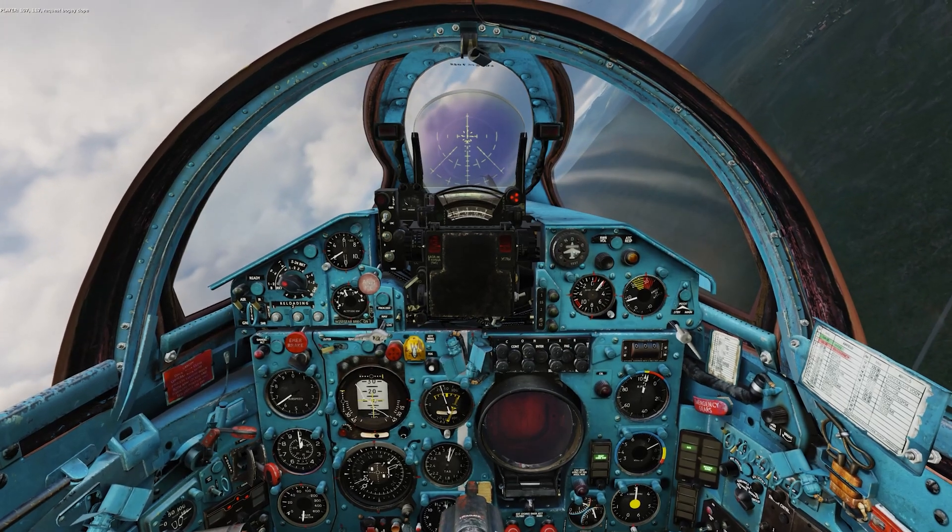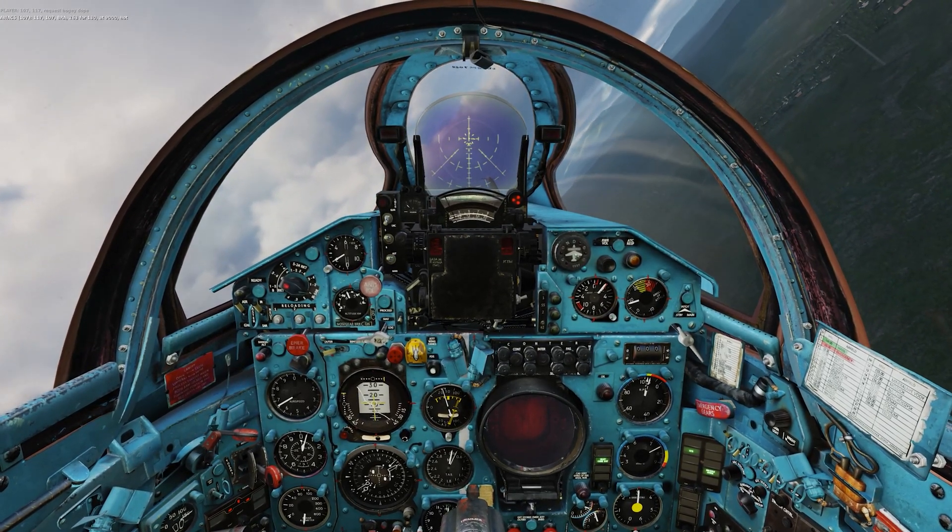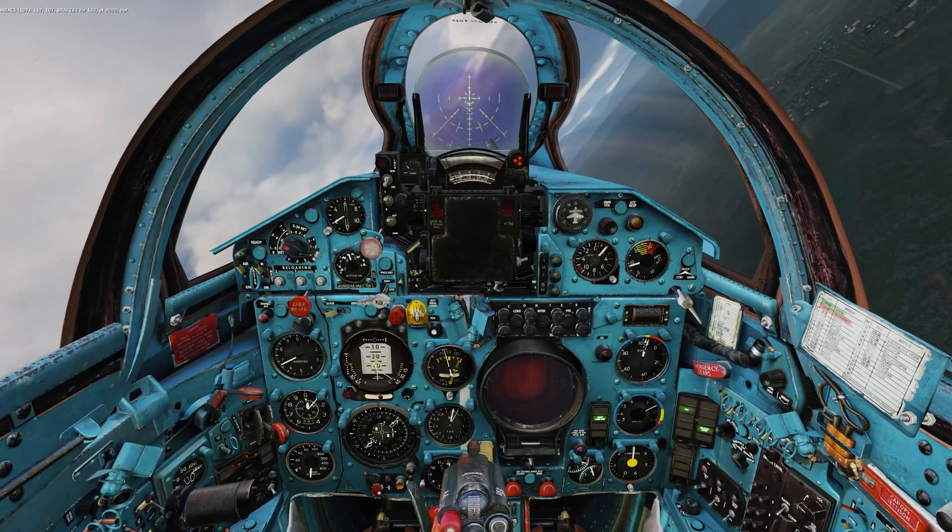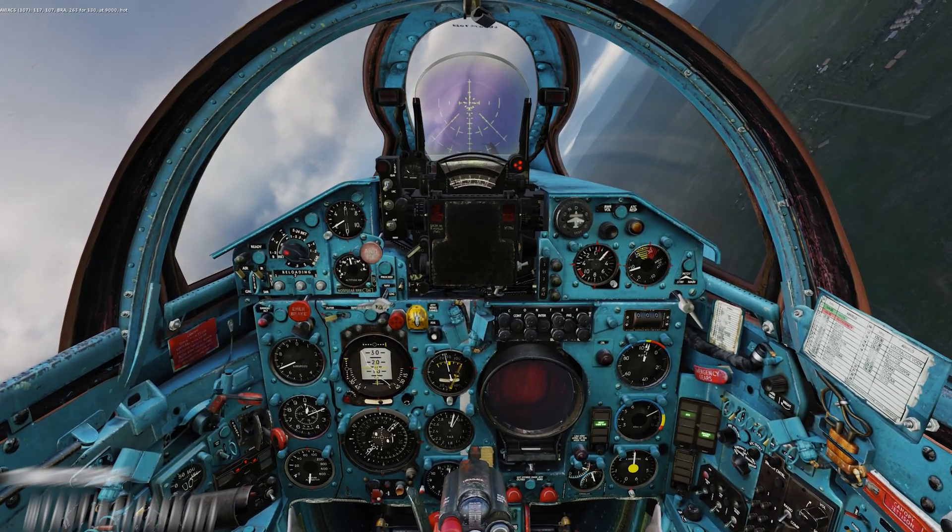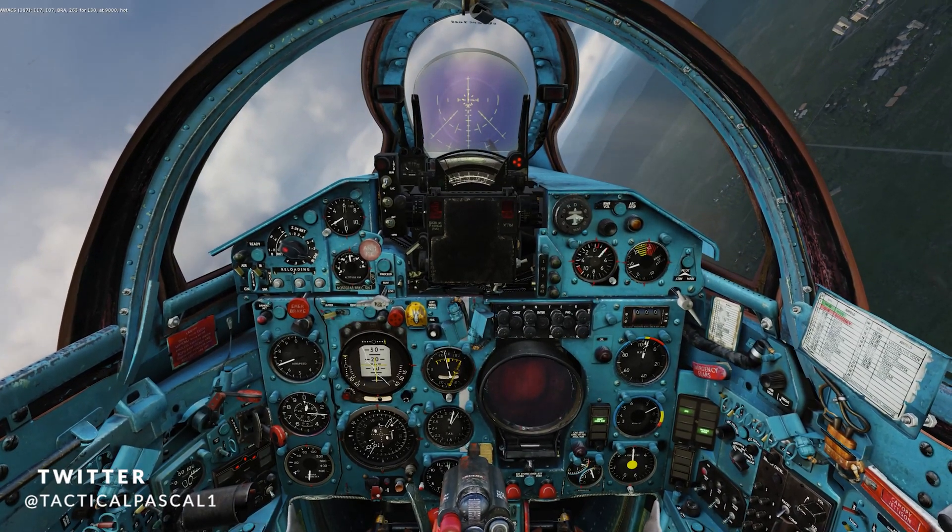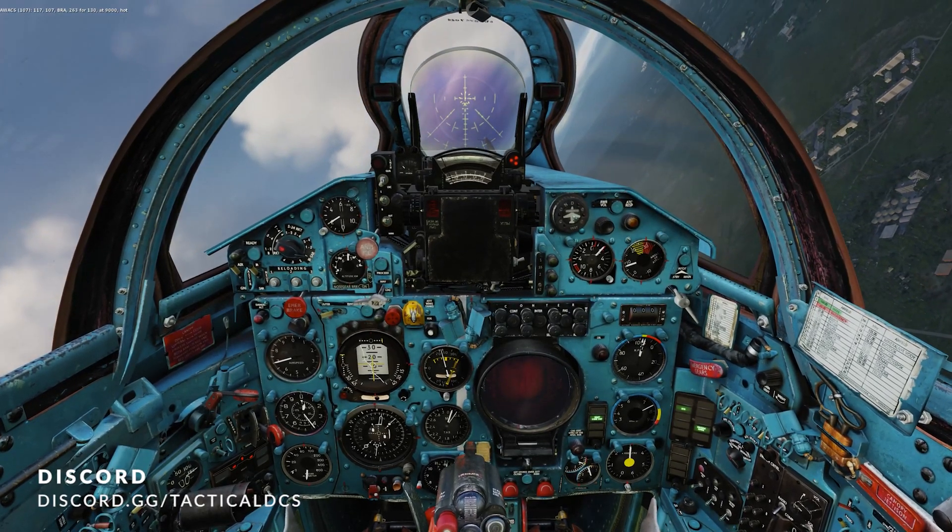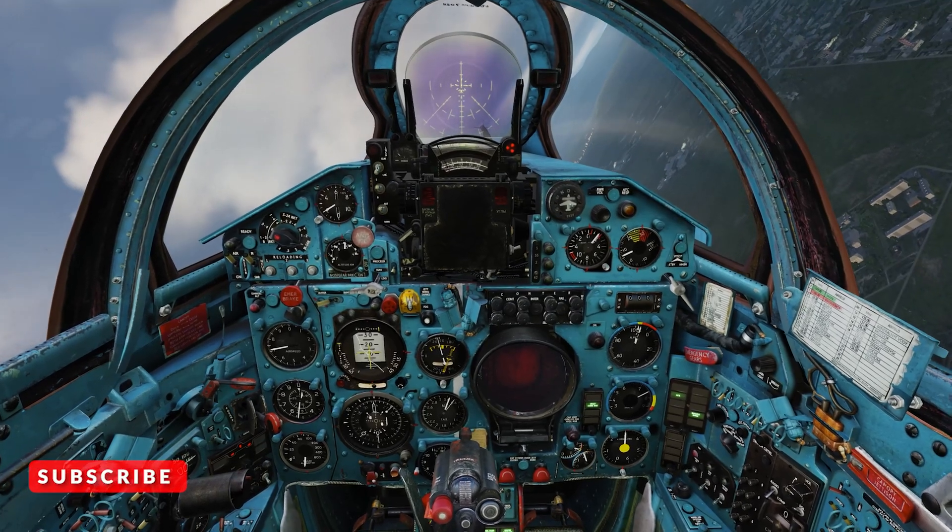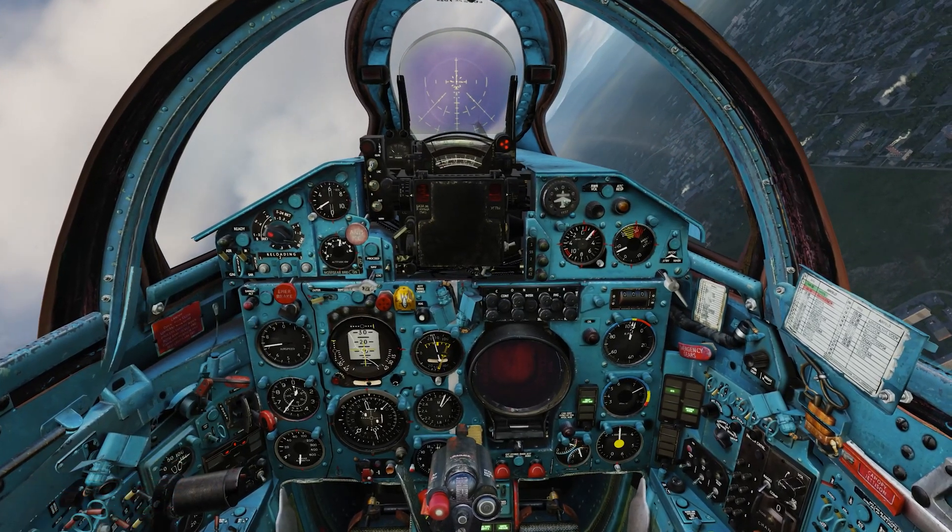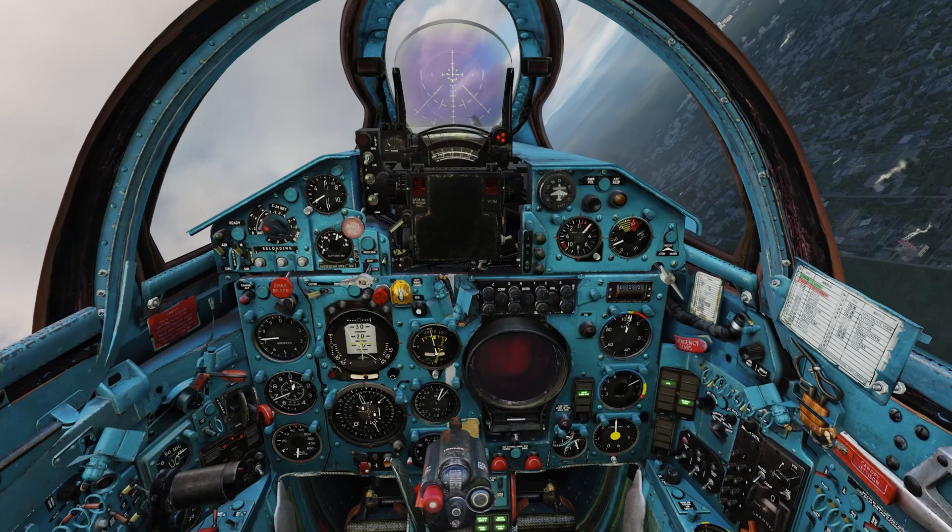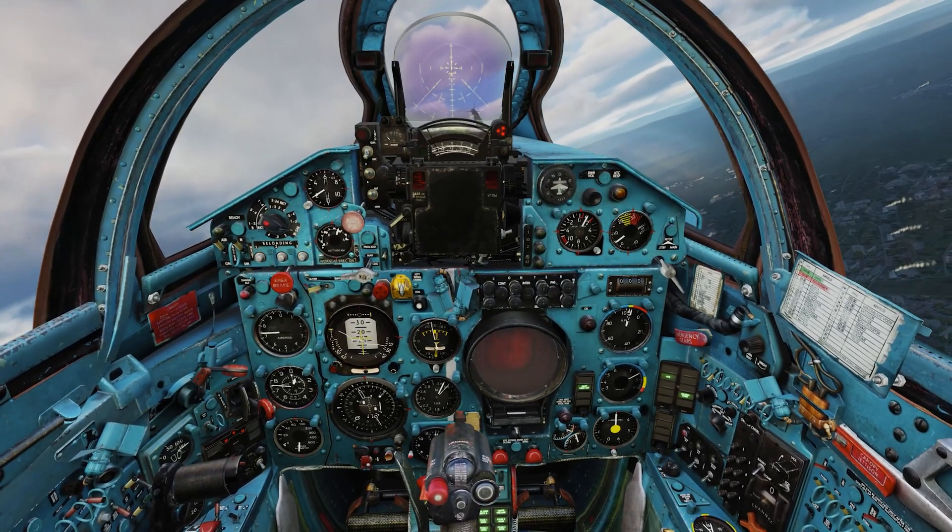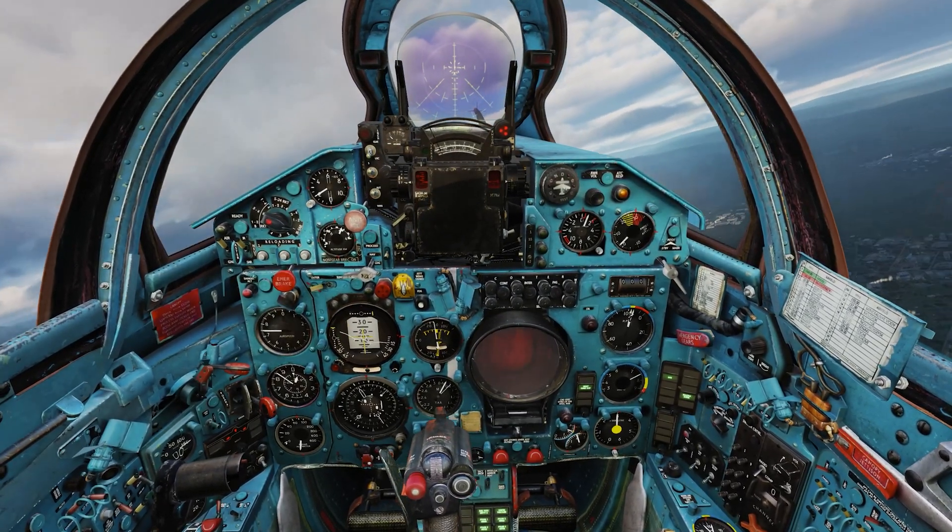Wingman's rejoined, flaps going up to the neutral position, or the up position rather. Now we're going to fly towards 267, that was the last bearing the GCI gave us. I'll ask him again. Bogey dope, he's going to tell us where the target is. 263 for 130, so we're going to roll all right around on a 260 to cut off that target heading, or rather cut off the bearing. Passing 240, 250, rolling out about 260.